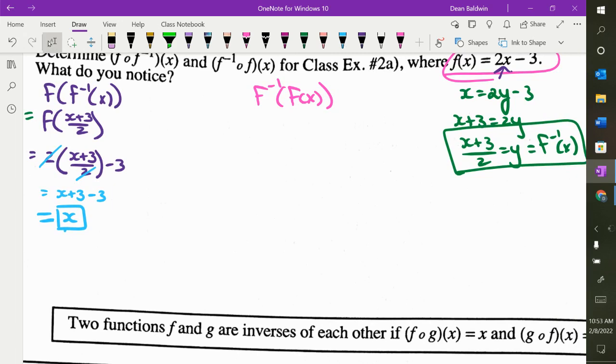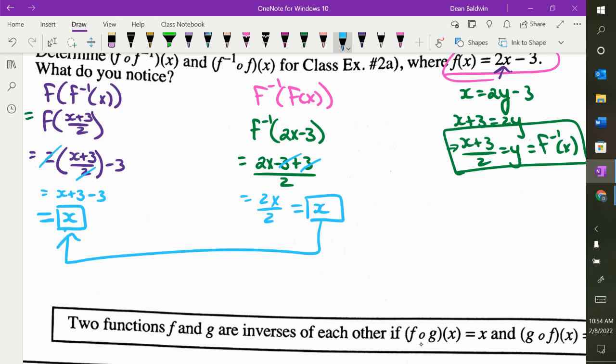Let's do this next one. The original into the inverse. So this means f of x is 2x minus 3. All of that goes in for x in the inverse right there. What happens to the 3s? What happens to the 2s? Same, same.